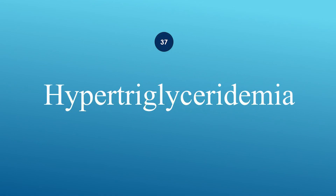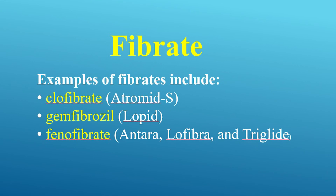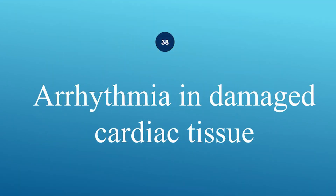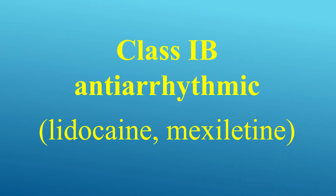What is the hypertriglyceridemia treatment? Use fibrates such as clofibrate, gemfibrozil, or fenofibrate. How to treat arrhythmia in damaged cardiac tissue? Use class I-B antiarrhythmics, such as lidocaine or mexiletine.